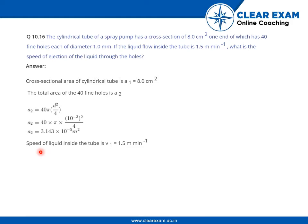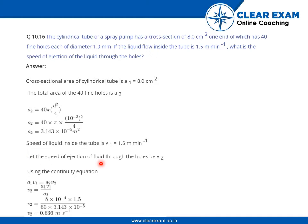And, the speed of the liquid inside the tube is 1.5 meter per minute which is given in the question. Now, let the speed of the ejection of fluid through the holes be v2. So, using the continuity equation, a1 v1 equals a2 v2.